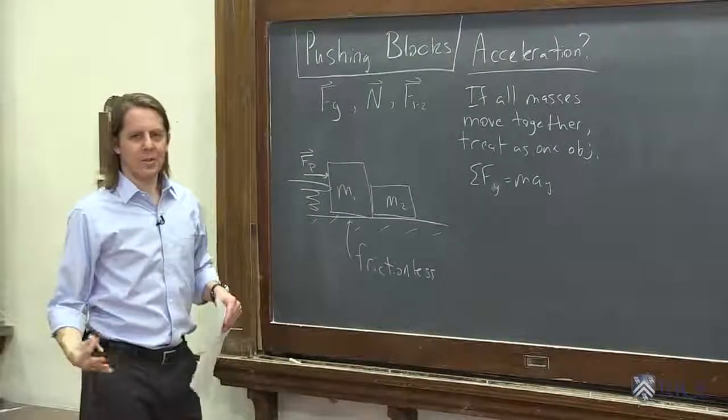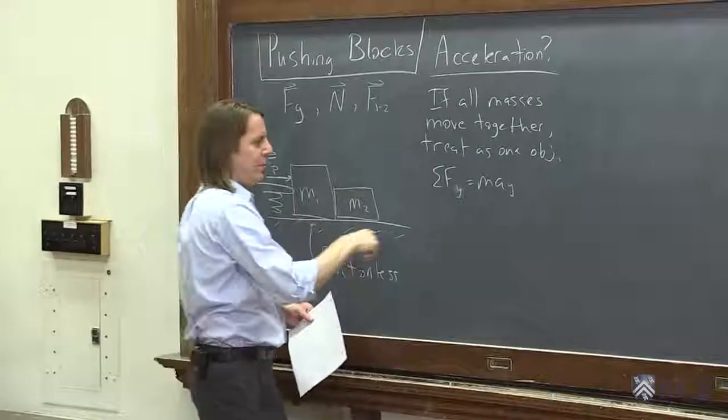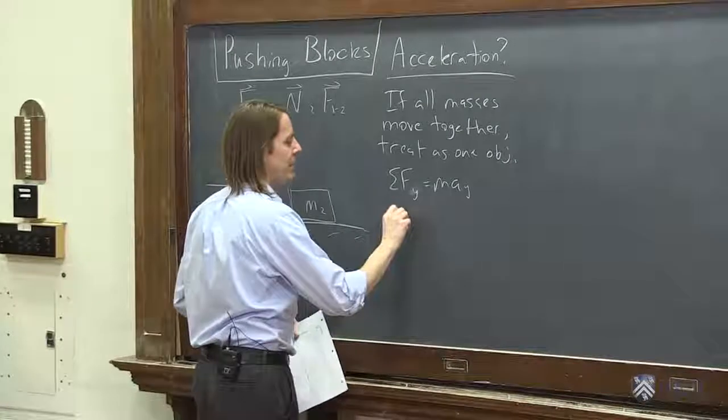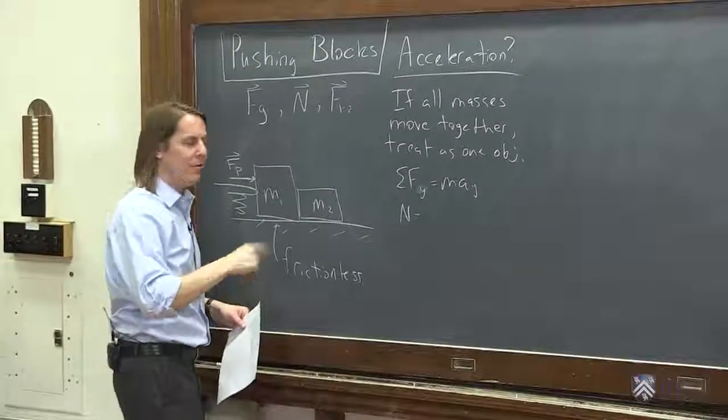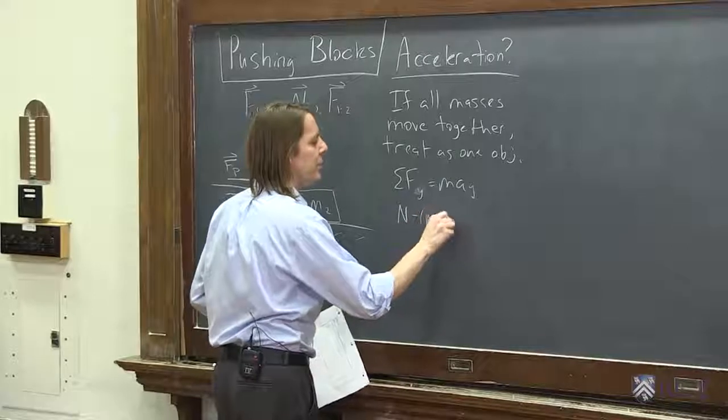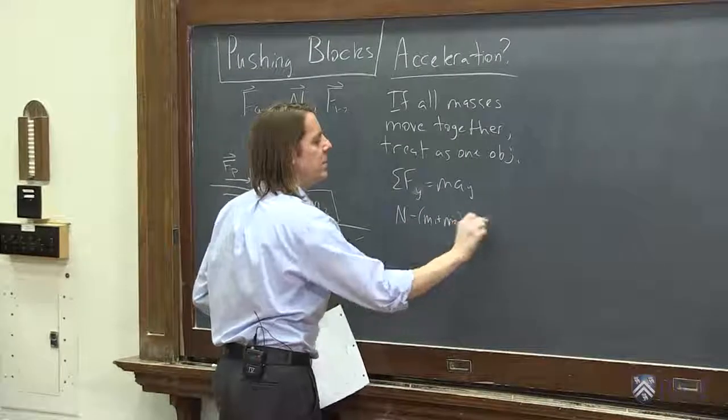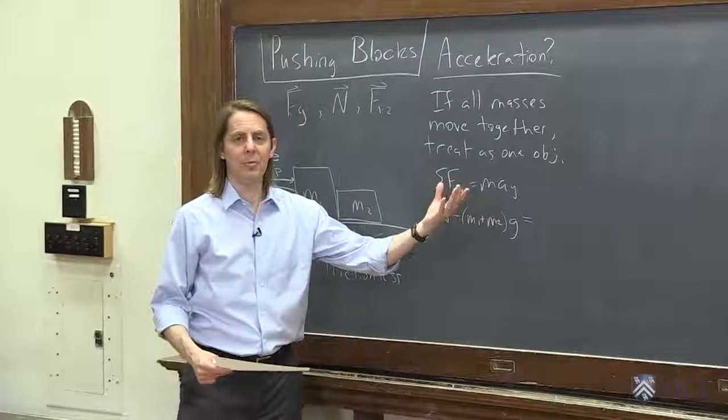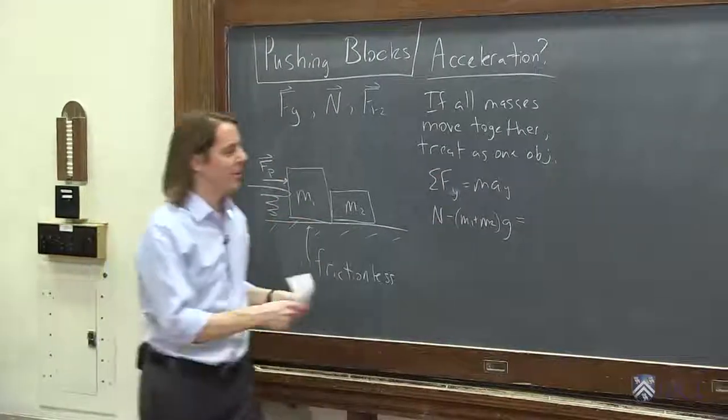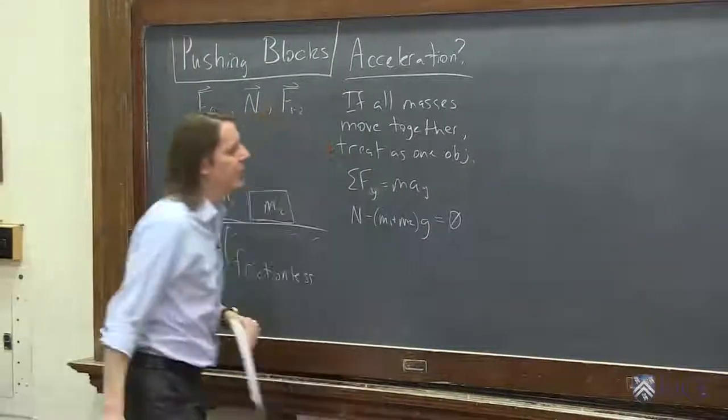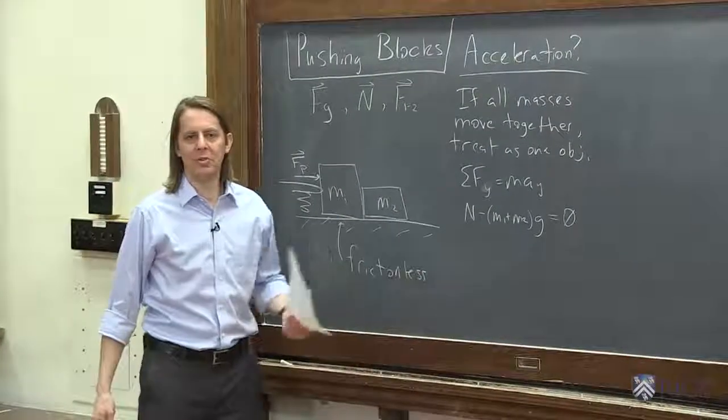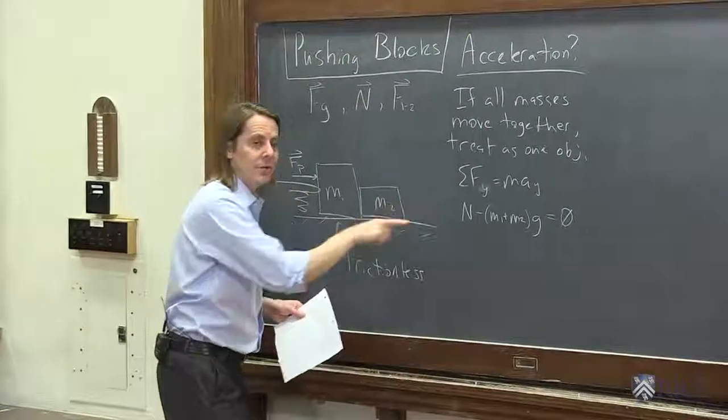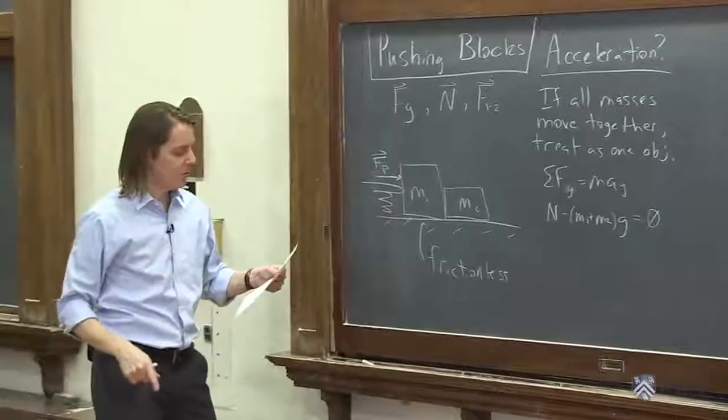Sum of the forces in the y equals mass times acceleration in the y. Well, the y direction isn't actually the interesting direction here. We do have Mg pulling down. So we have the normal force pushing up minus Mg pulling down. M would be the total, M1 plus M2 g, equals the mass, M1 plus M2. The acceleration in the y is 0. It's not moving up and down in the y. So that's really just a way to find the normal force in this case, which isn't really what we want to know.